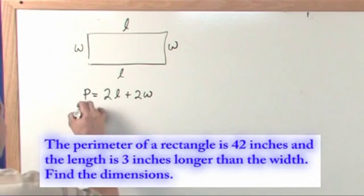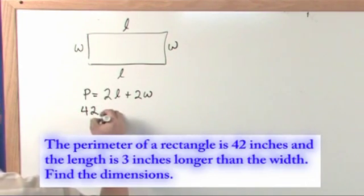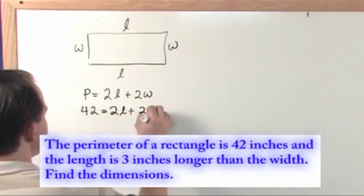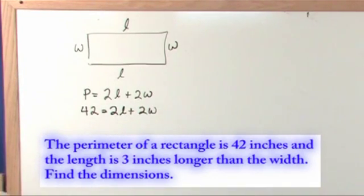But it tells me in the problem that the perimeter is equal to 42. So that's going to be 2L plus 2W. This is one of my two equations. This is one of the ones I want to keep to help me solve the problem.